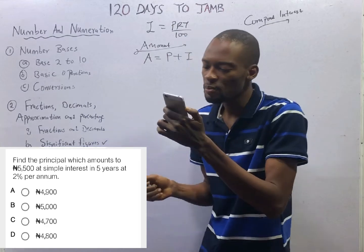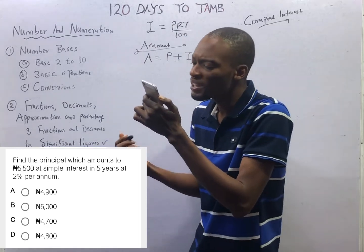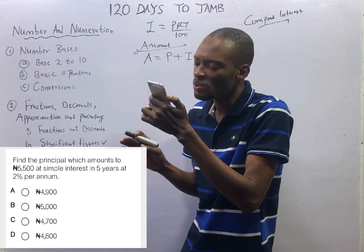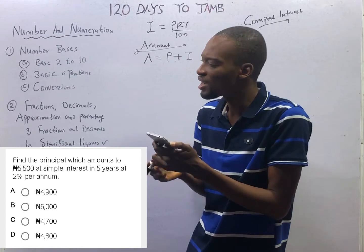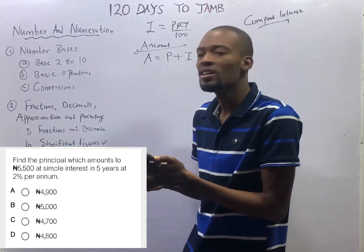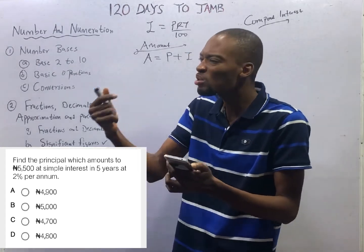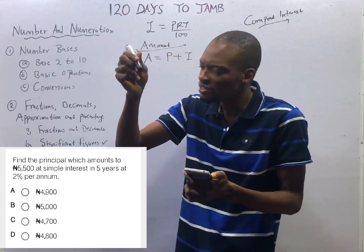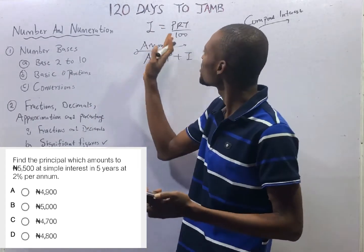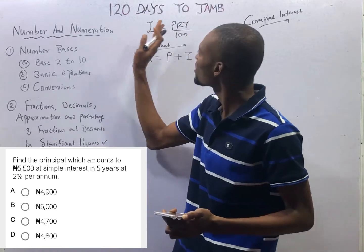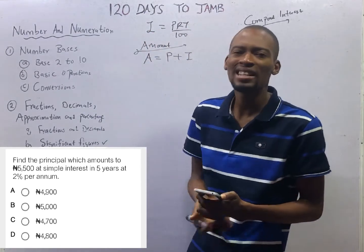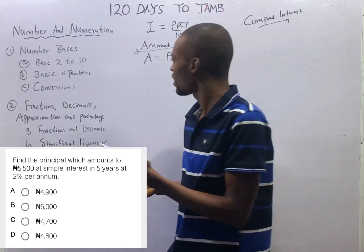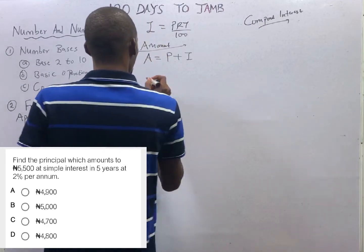This is: find the principal which amounts to N5,500. So 'amounts to' means the N5,500 is not interest, it is not principal — it is simply the amount.